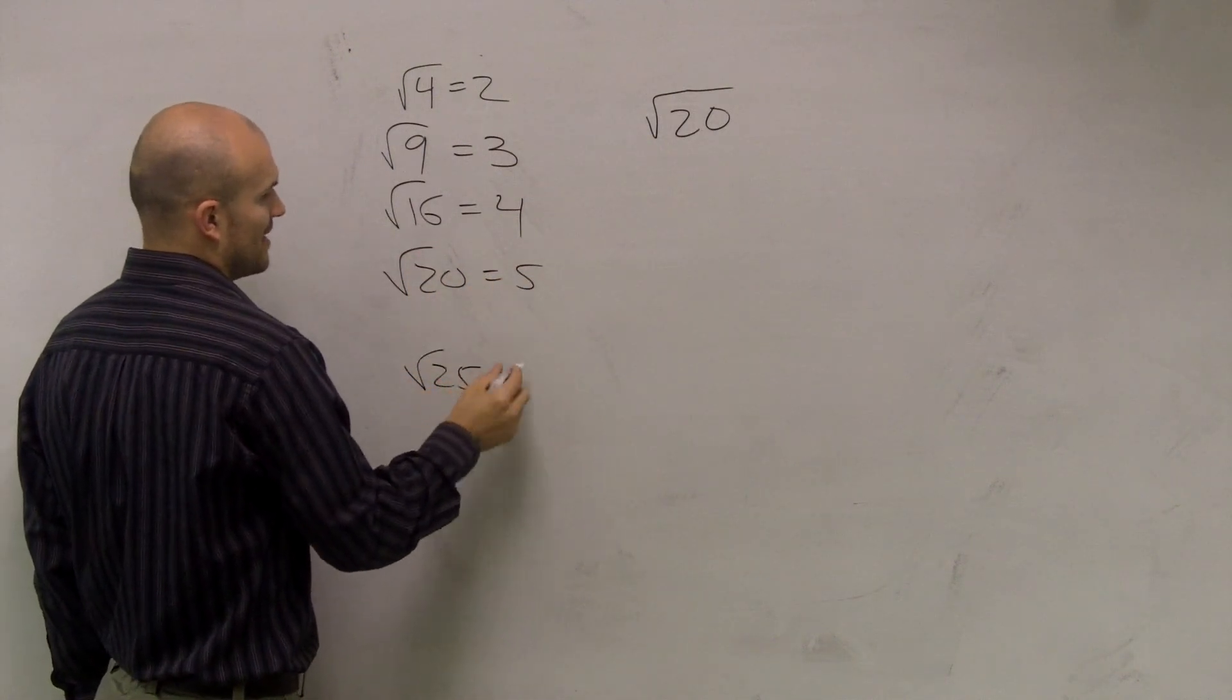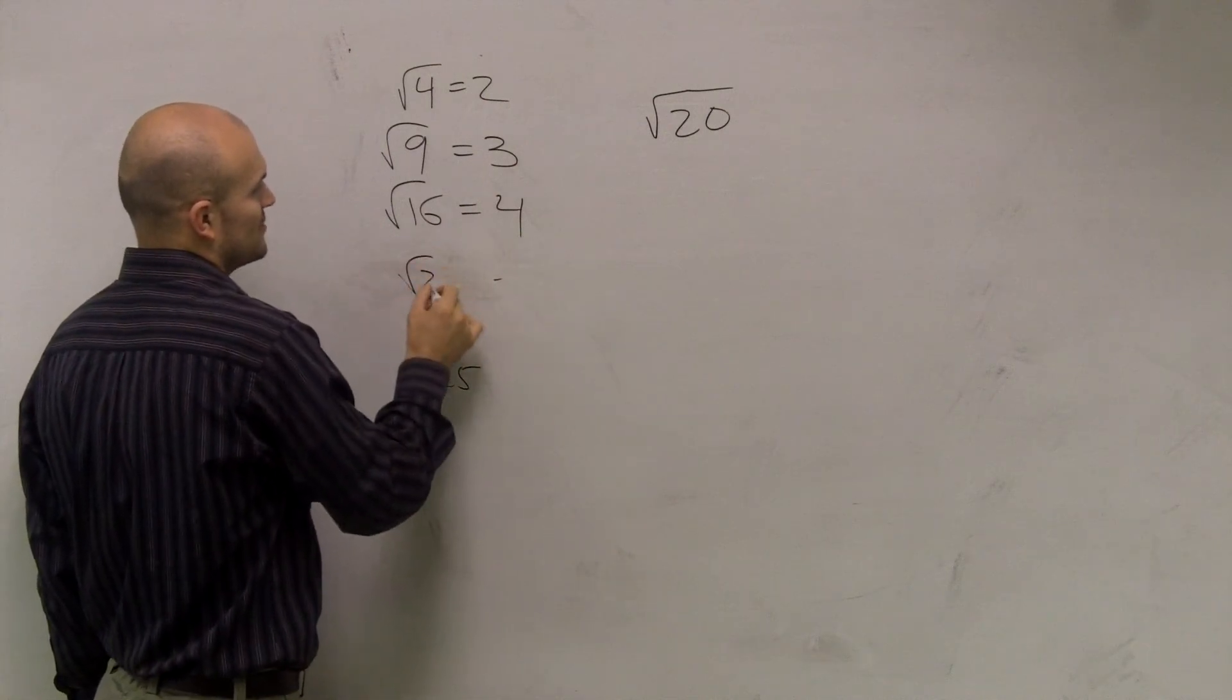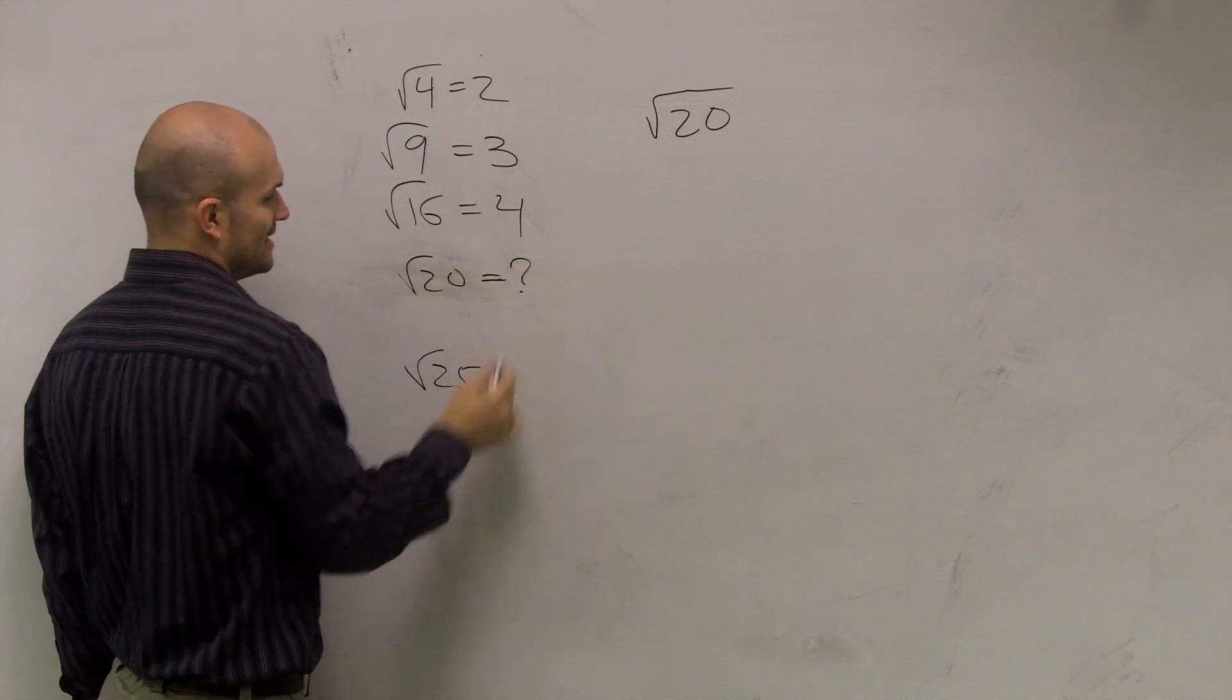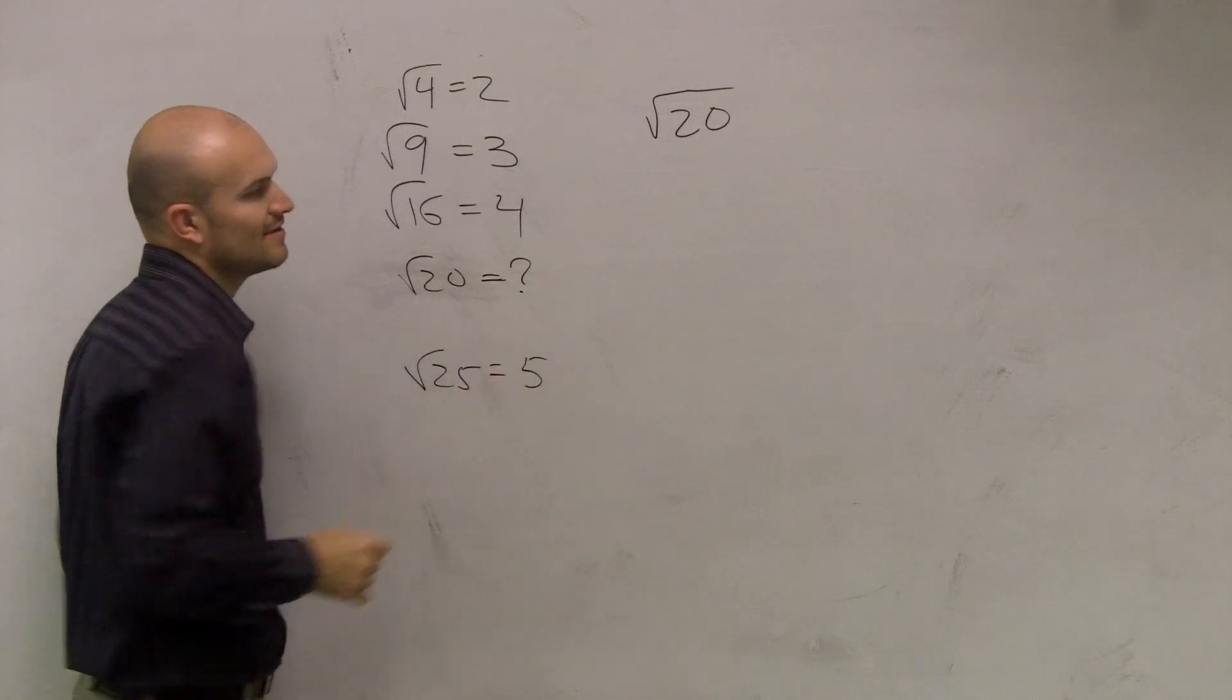And the square root of 25, oh, the square root of 20, sorry. The square root of 20, we don't know what that is, but we know the square root of 25 is 5, right?